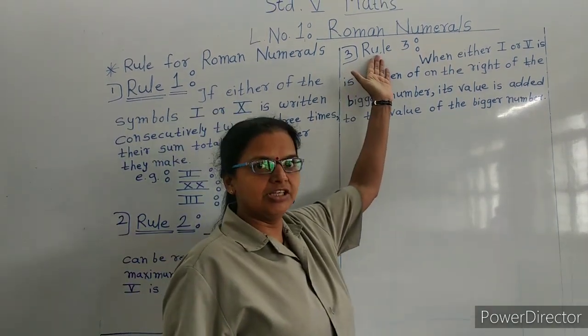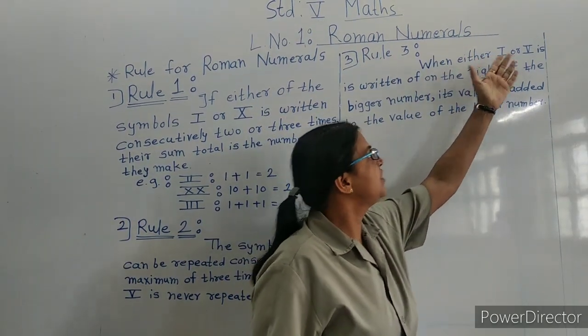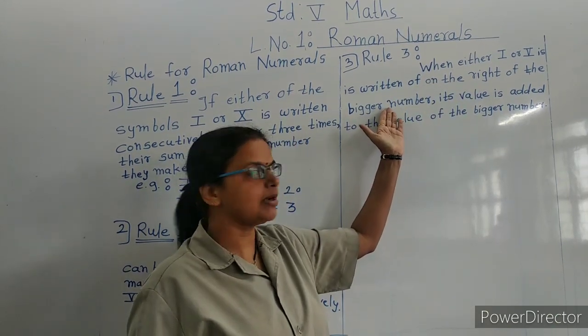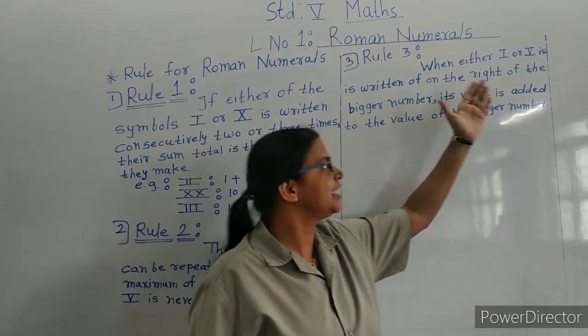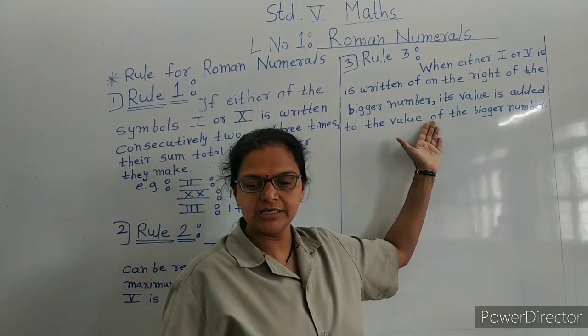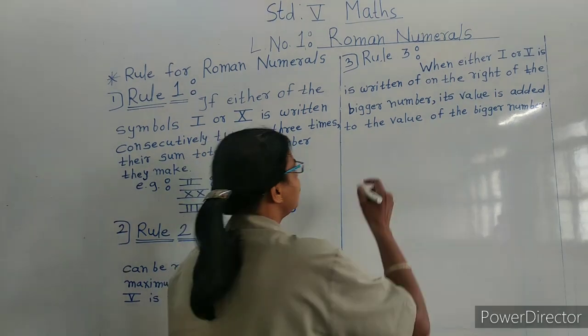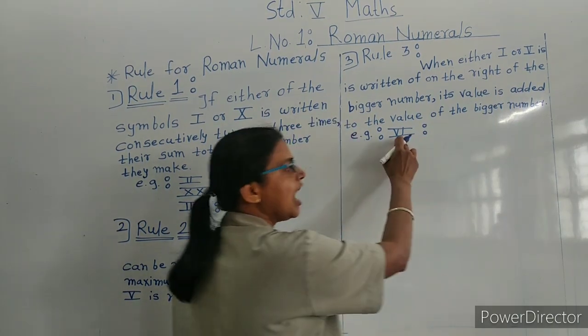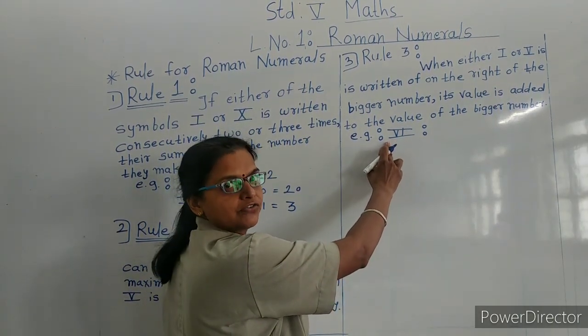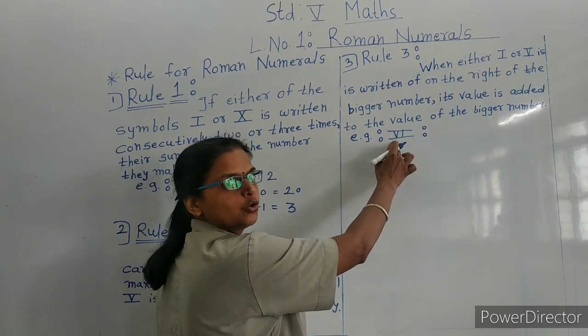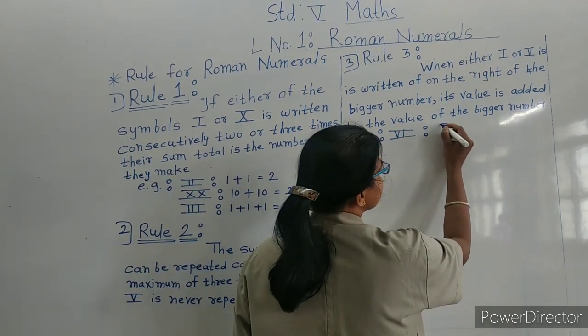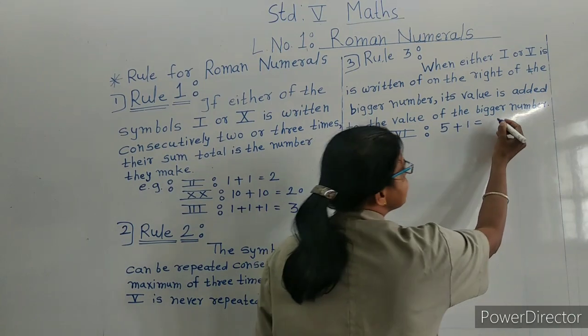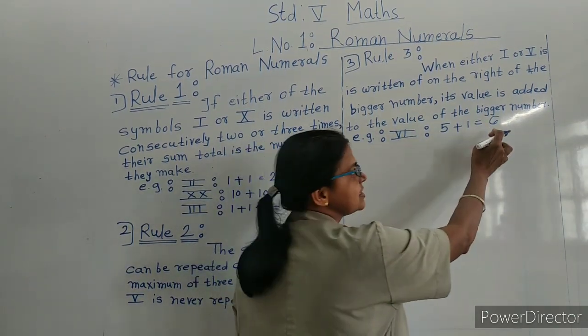Now Rule 3: When either I or X is written on the right of the bigger number, its value is added to the value of the bigger number. For example, VI: I is right of V, so we have to add to V. V's value is 5, I's value is 1, so 5 plus 1 is 6. VI means 6.